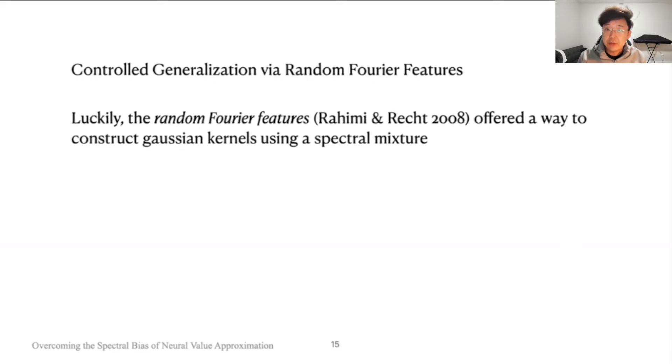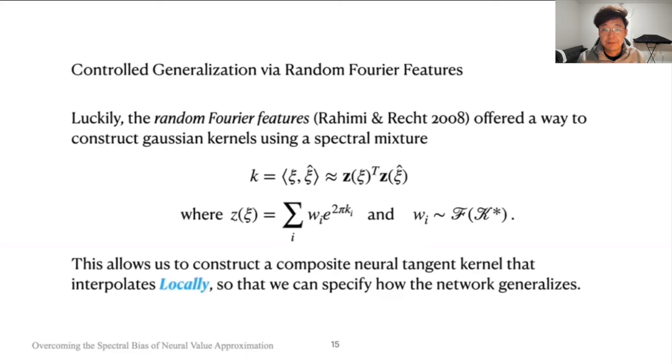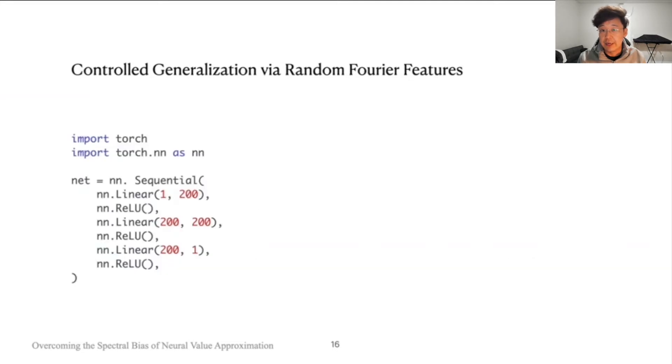Various recent work in natural language processing and computer graphics show the power of random Fourier features and position encodings. And they allow us to construct a composite neural tangent kernel that interpolates locally so that we can specify how the network generalizes during training.